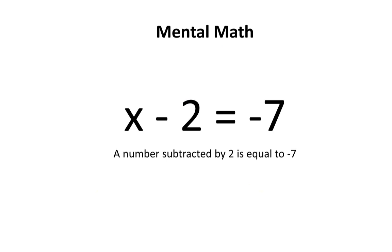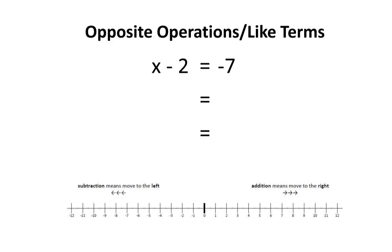In our next example, a number subtracted by 2 is equal to negative 7. In other words, x subtract 2 equals negative 7. What could this number be? Using mental math to find the value of x is going to be a little bit difficult, since these are unfriendly numbers — these are negative numbers. Therefore, I would highly recommend you use this technique we are learning today. Look at the equation x subtract 2 equals negative 7. You'll notice that these two terms are like terms, since they're both just numbers.